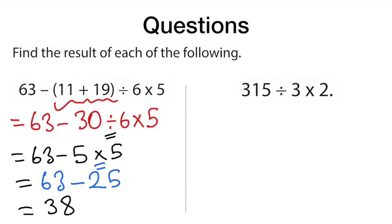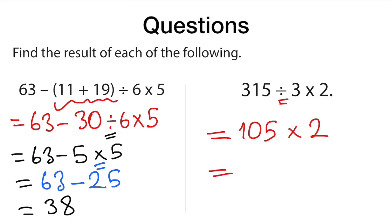The last question has division and multiplication. Division comes first — it is on the left. 315 divided by 3 equals 105, and then times 2 equals 210.